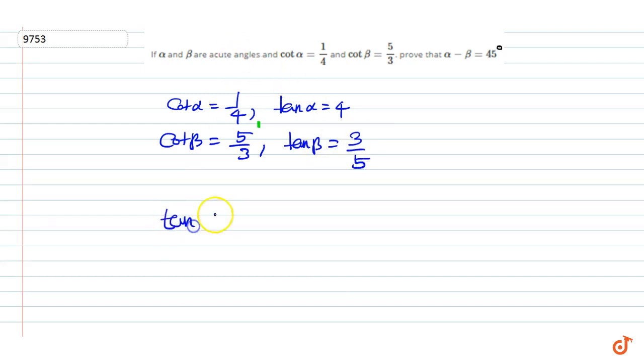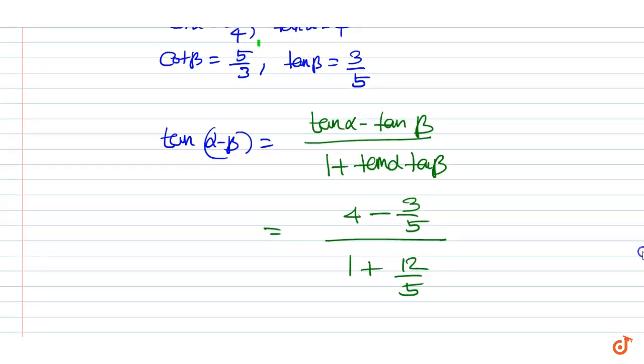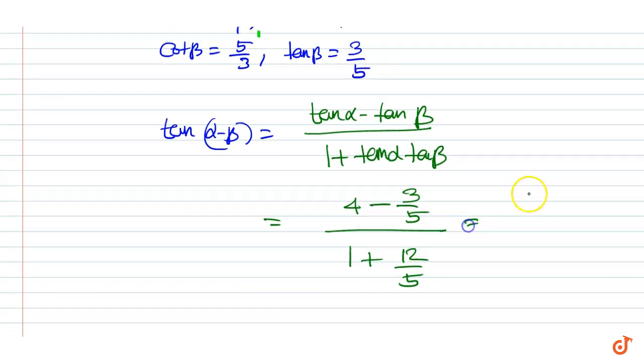Now, tan(α - β) equals (tan α - tan β)/(1 + tan α tan β). This is equal to (4 - 3/5)/(1 + 12/5), equal to 17/17, equal to 1.